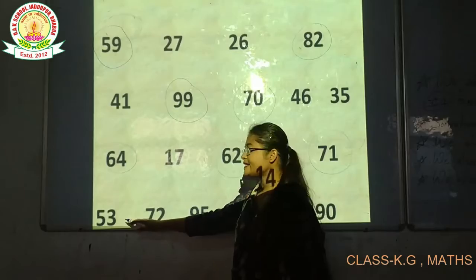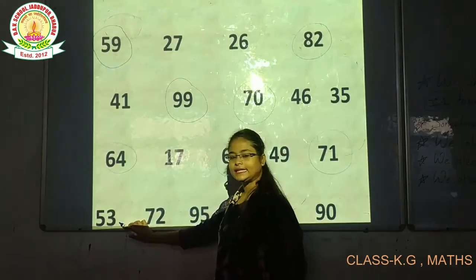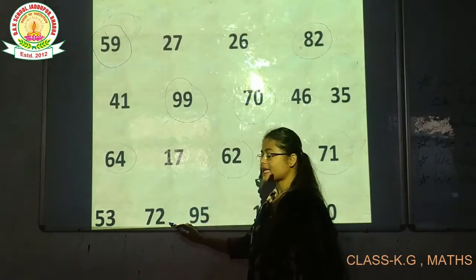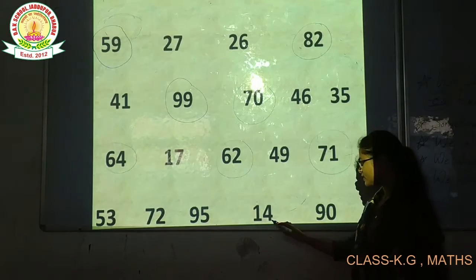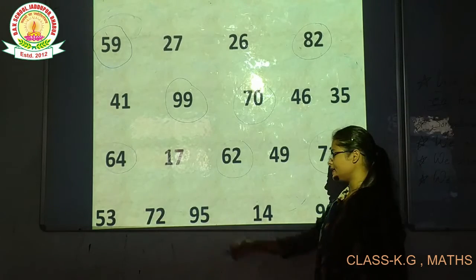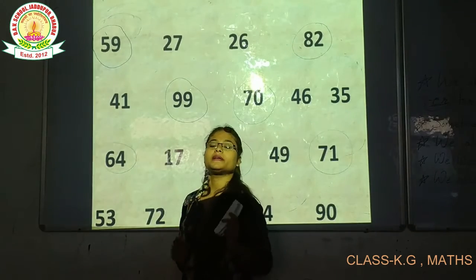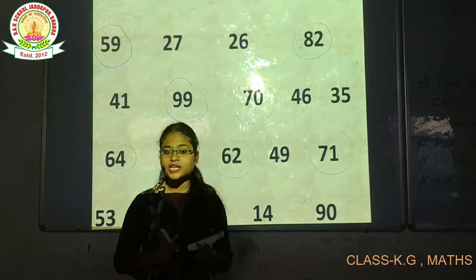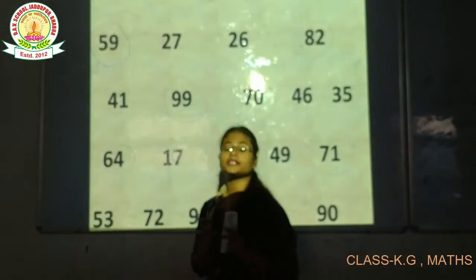Next numbers are 50, 72, 95, 40, and 90. This number is 90. This number is between 50 and 100.